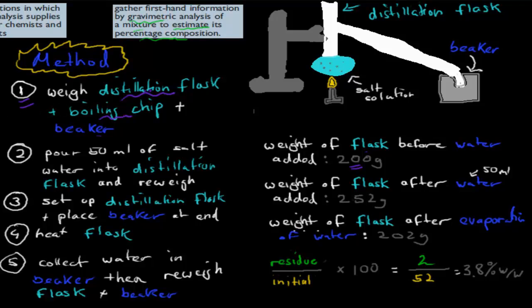Next, we poured 50 ml of salt water, that was the salt solution, into a distillation flask. And we re-weighed it. So we re-weighed it. Now we say, okay, it was 200 without, but beforehand, now it's 250. That was the second step.